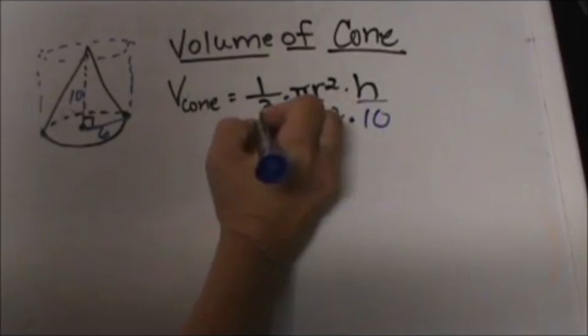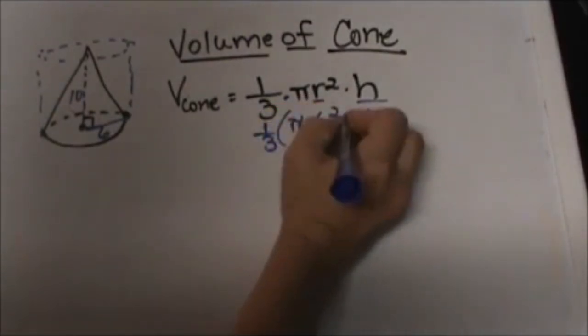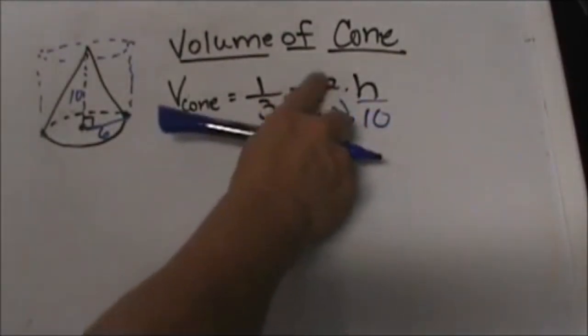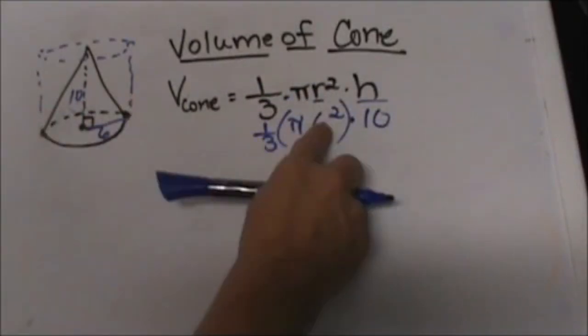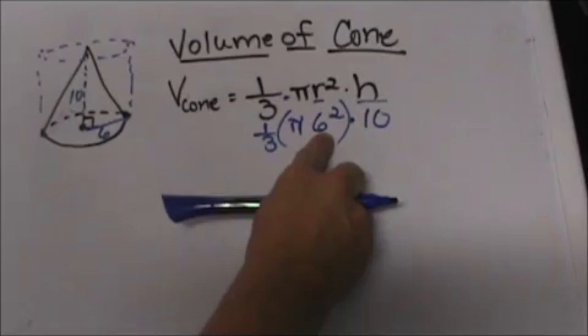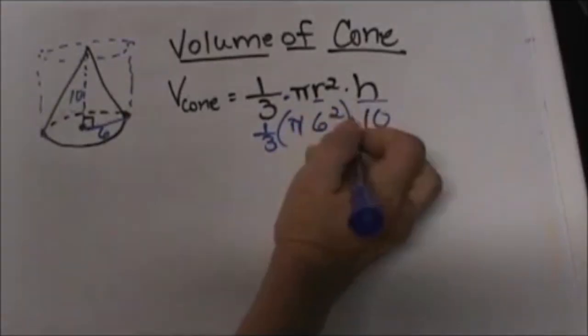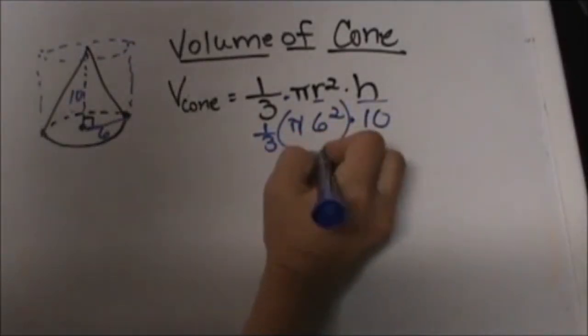And then we are just going to plug and chug from there. So let's simplify our area of the base which is pi r squared, it is the circular base. So 6 squared is 36 times pi is just 36 pi.